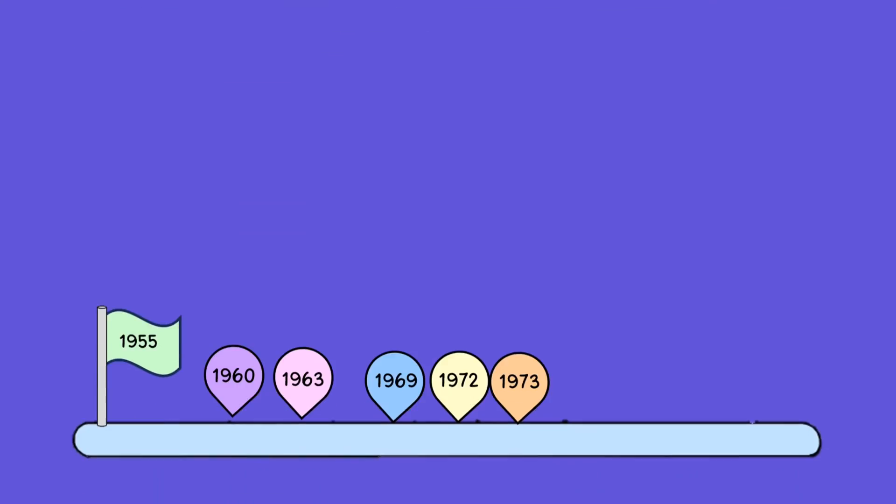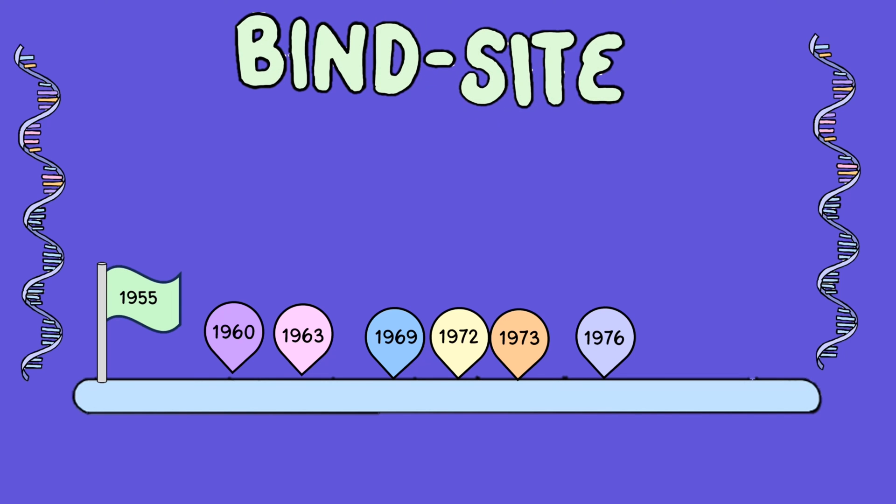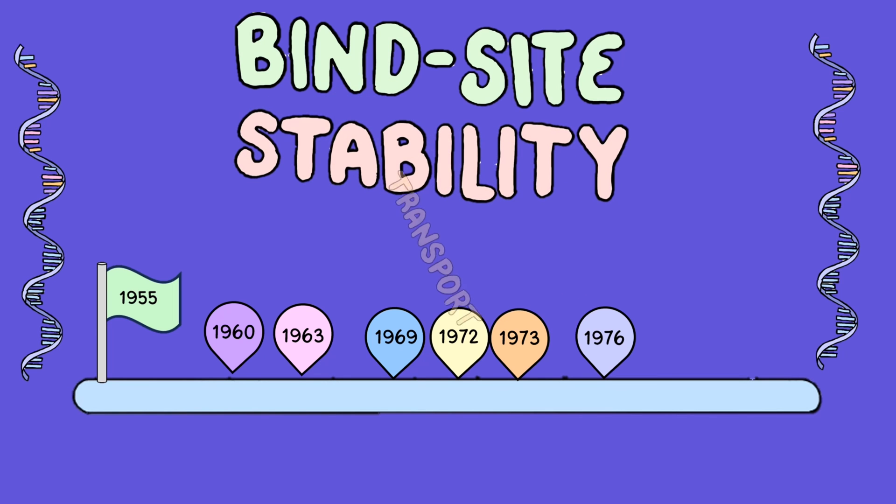However, it wasn't until 1976 that the functional significance of the poly-A tail in eukaryotic mRNA was uncovered, as Van Ness and colleagues discovered its role as a binding site for molecular regulators of translation, RNA stability and transport.